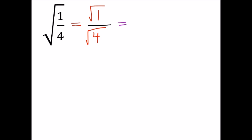Just for the sake of time on this one, we can see that both of these are perfect squares. The square root of one is one, square root of four is two, so my final answer ends up just being one half.